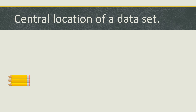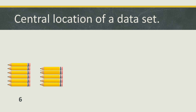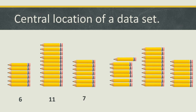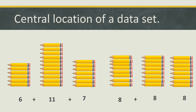Let's suppose we have a few pencils distributed in different stacks. One stack has 6 pencils, another stack has 11 pencils, then a stack of 7 pencils, a stack of 5 pencils, and one more stack of 7 pencils. Now if we want to equalize them into equal stacks, we get 8, 8, and 8 — that means the central tendency is 8, and both sides have a sum of 24.